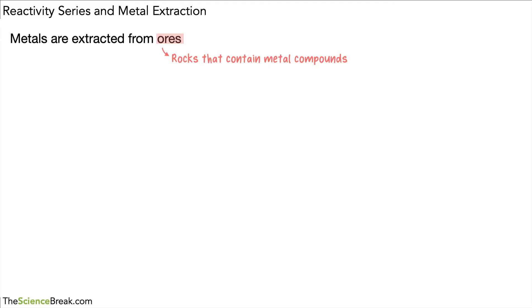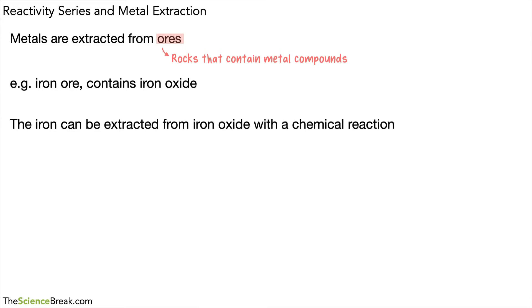One example of a metal compound in an ore is iron oxide. Iron ore contains iron oxide. Iron ore is dug from the ground and it contains iron oxide. The iron can be extracted from the iron oxide with a chemical reaction.